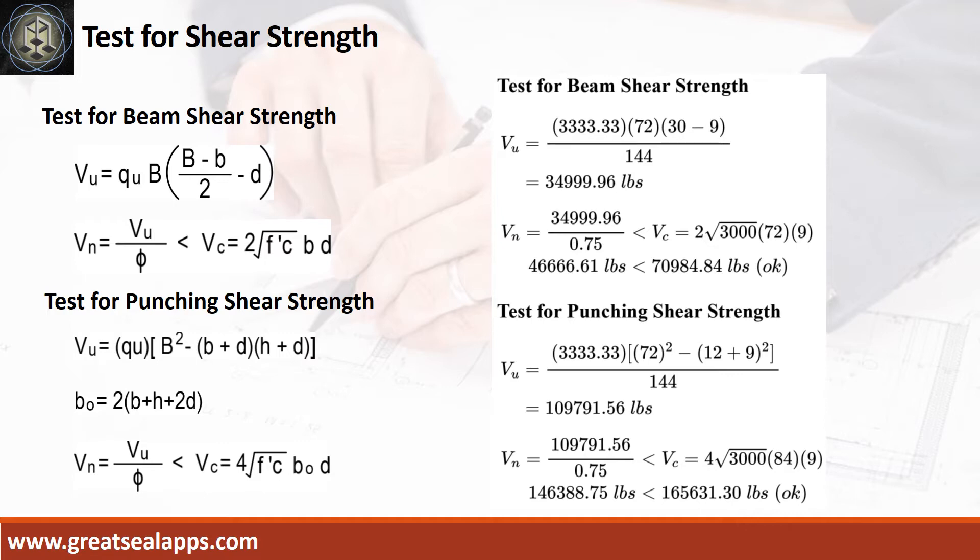The maximum punching shear force is 109,791.56 pounds. The nominal punching shear force is 146,388.75 pounds, less than 165,631.3 pounds.